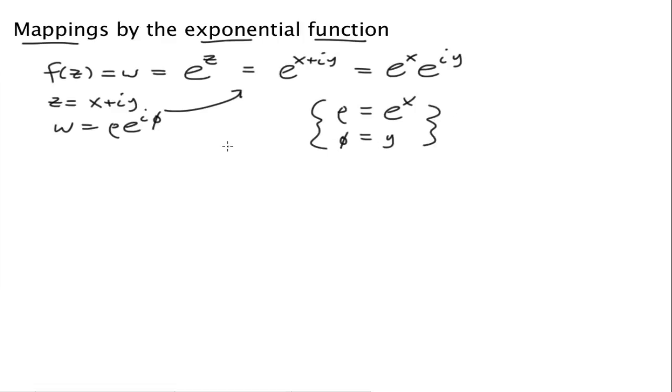So that's the function, and it's fairly well defined. It makes sense. It's pretty straightforward, but we're really going to be looking at mappings. We want to see what's going to happen to sets in the complex plane in the z space, and then what happens with this particular function when we map it to the w space.